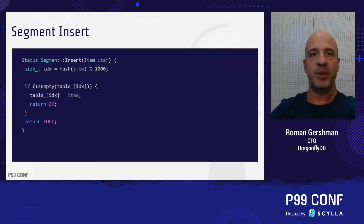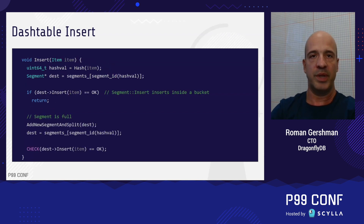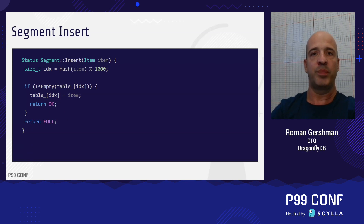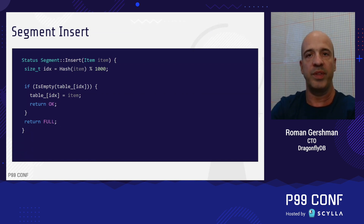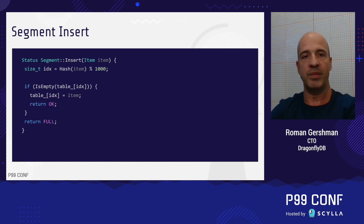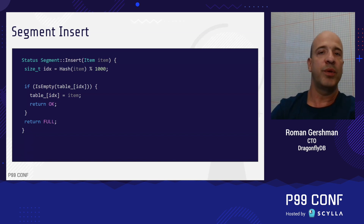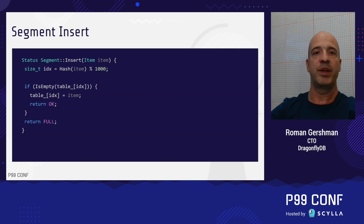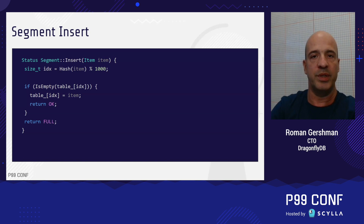I mentioned before that our segments are built upon flat arrays of length 1,000. Let's see how we could implement the segment insert operation that corresponds to the function call at line three. The most naive approach would be to insert the item to a position induced by its hash value. Due to the birthday paradox, this approach is not very efficient and will often return the full result when the segment is far from being full, so our table won't be utilized well. The contribution of the dash table paper mainly revolves around the segment design — specifically, it implements a very fast and memory-efficient open addressing scheme that reaches 95% occupancy rates. Due to time constraints, I won't cover it here, but you're welcome to read the docs in our GitHub repository or just read the paper.